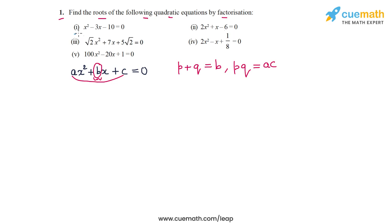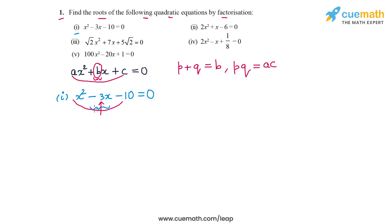Let's begin with part 1. The equation is x² - 3x - 10 = 0. We have to split the middle term -3x such that the sum of the coefficients equals -3 and the product equals 1 × (-10) = -10. The two numbers whose sum is -3 and product is -10 are -5 and 2.